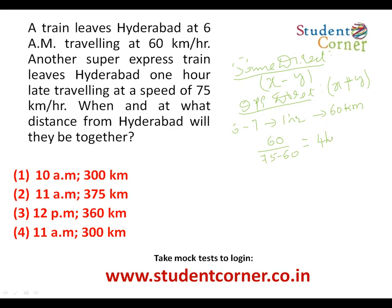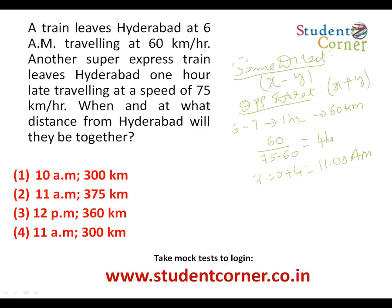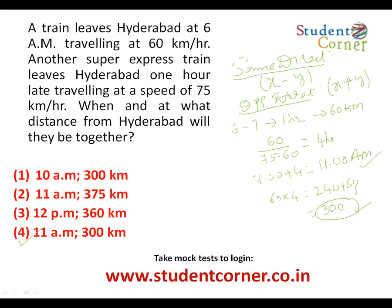Time to close the 60 km gap at relative speed 15 km/h is 60 divided by 15 equals 4 hours. This is after 7 o'clock, so 7 plus 4 hours is 11 AM — that is when they meet. For the distance from Hyderabad: the first train travels at 60 km/h for 5 hours total (1 hour before 7 AM plus 4 hours after), giving 60 into 4 equals 240, plus the earlier 60 km, totalling 300 km from Hyderabad at 11 AM.